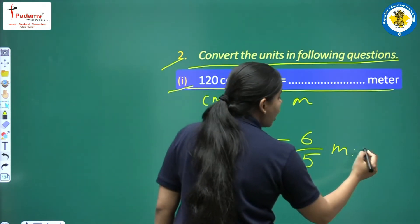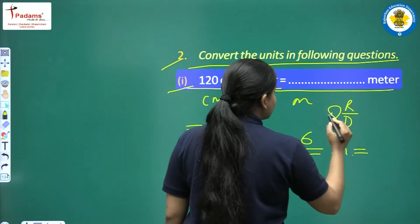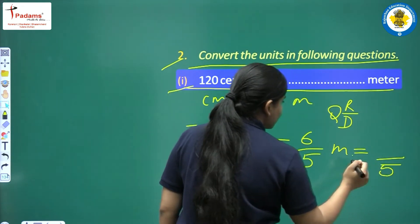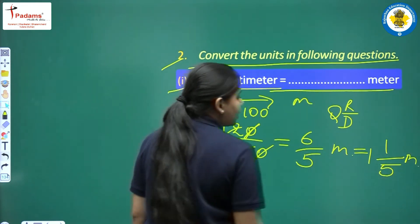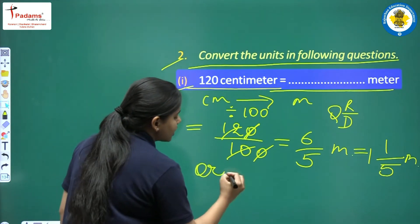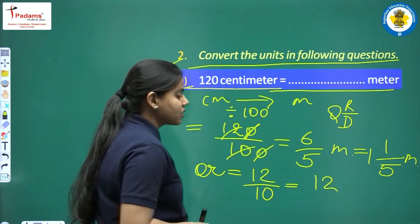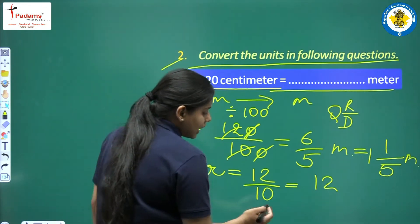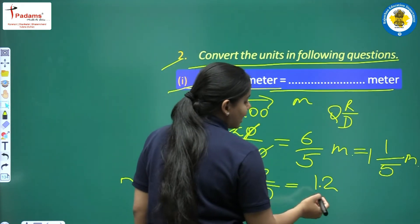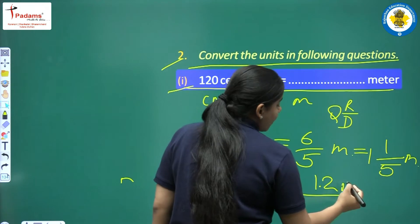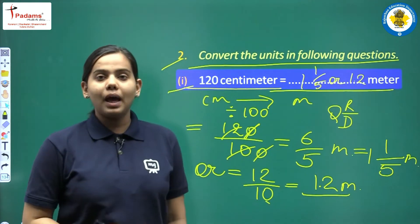We can leave it as a mixed fraction: Q remainder upon D. Denominator 5 stays as is, and the answer is 1 whole 1 upon 5 meters. The second method: we can also write the answer as a decimal. Because here we had 12 upon 10, and you know from the decimals chapter the easy trick — with one zero in the denominator, we add a decimal point, giving 1.2 meters. In both ways the answer is the same: 1.2 meters or 1 whole 1 upon 5 meters.